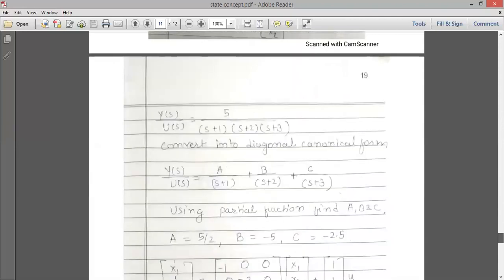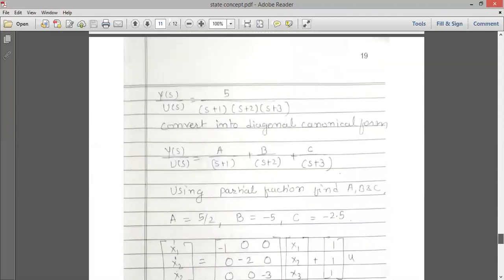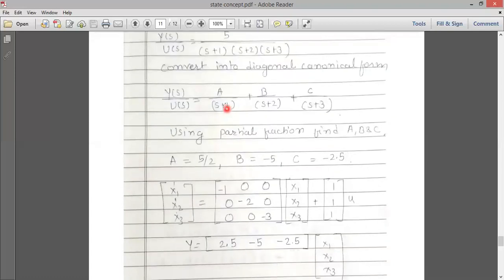Now another method to convert the given equation into the state model. But if the specific model is given, that is if the given system should be diagonal canonical form. So to understand this, another example we consider: (x+1)(x+2). So we have the dominant roots of the denominator. So that time it is easy to find out the diagonal canonical form. So again what we have to do: do the partial fraction and find out the ABC.